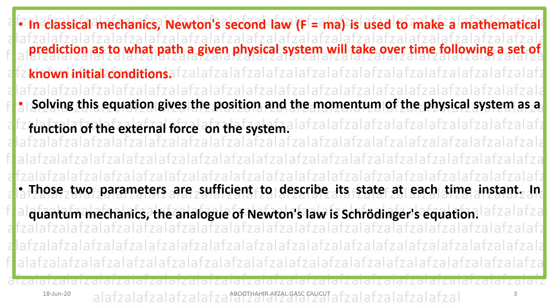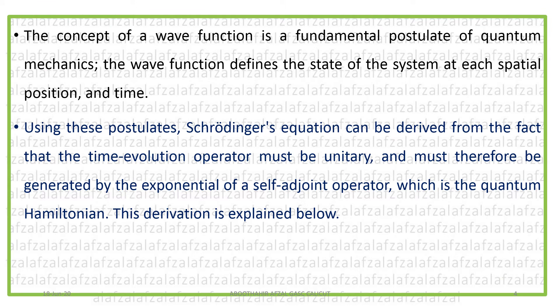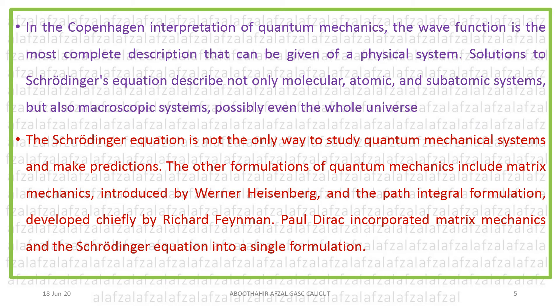Now, in a quantum mechanical system — which is a subatomic particle — the wave function is the property which describes the quantum mechanical system. Schrödinger's equation is basically an equation of the wave function; it is a differential equation acting on the wave function. The wave function is given utmost importance in quantum mechanics, and the wave function is the most complete description that can be given of a physical system.